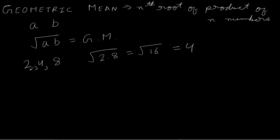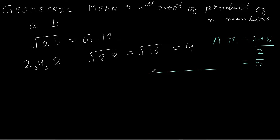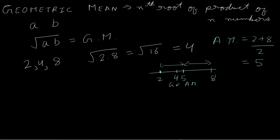If we have two numbers 2 and 8, the geometric mean is 4, whereas the arithmetic mean would be (2 + 8) / 2 = 10 / 2 = 5. If we think of a number line with 2 at one end and 8 at the other, the arithmetic mean is like finding a midpoint equidistant from both sides, giving 5. The geometric mean is 4, lying somewhere between them but closer to 2.